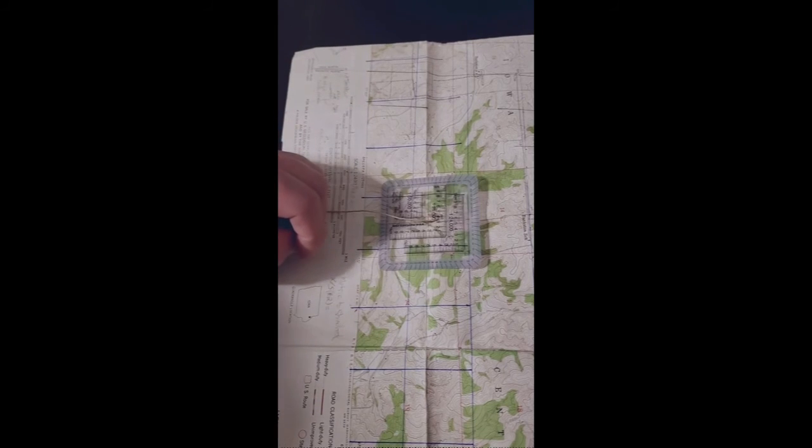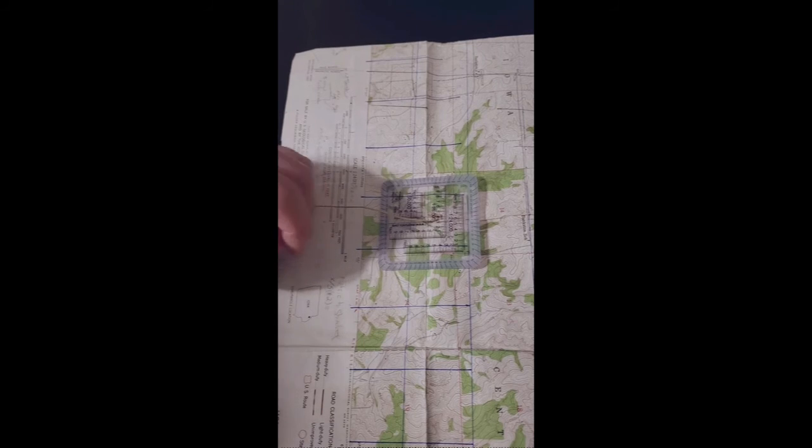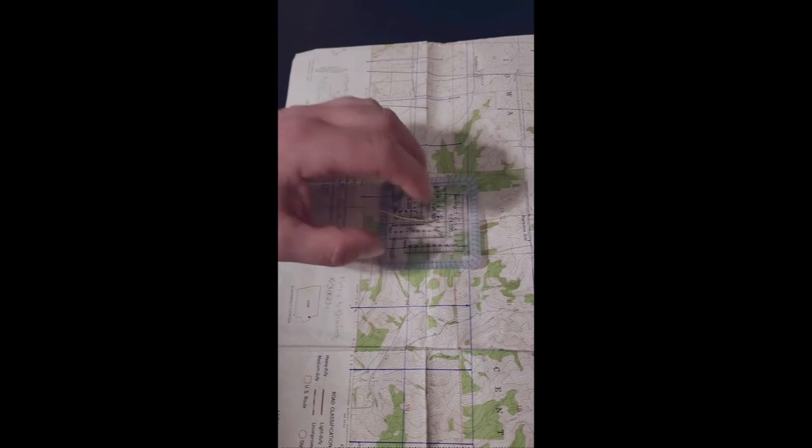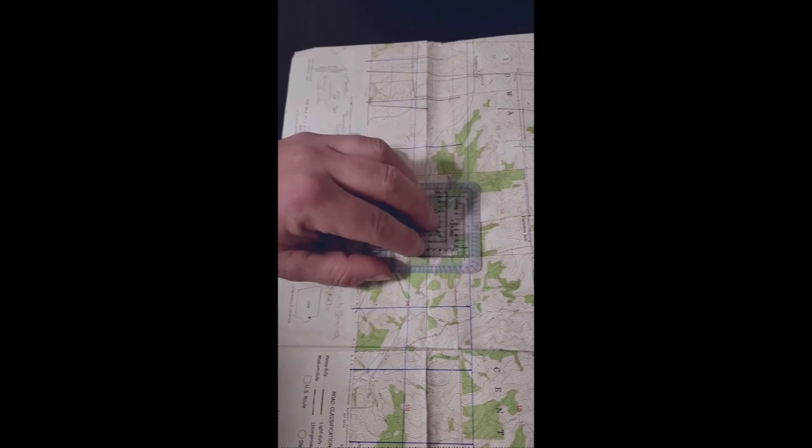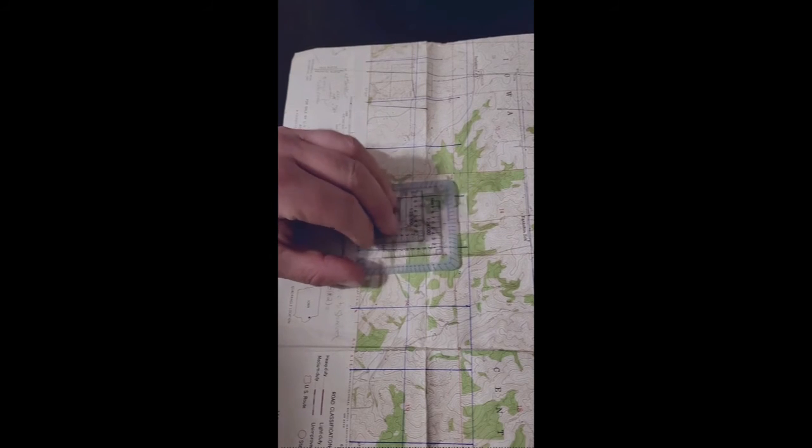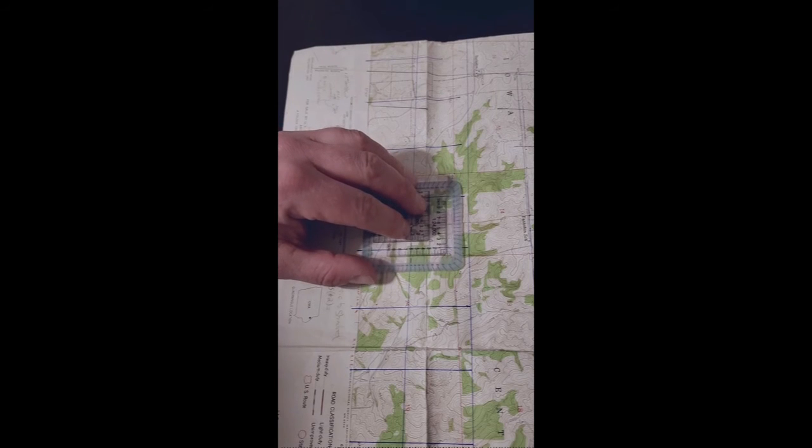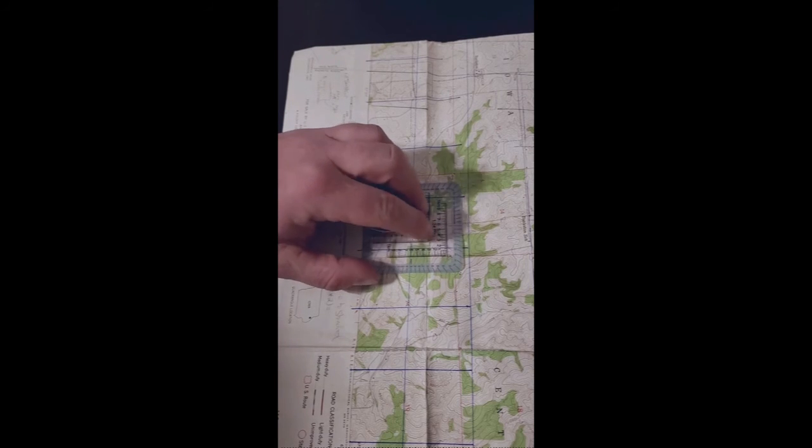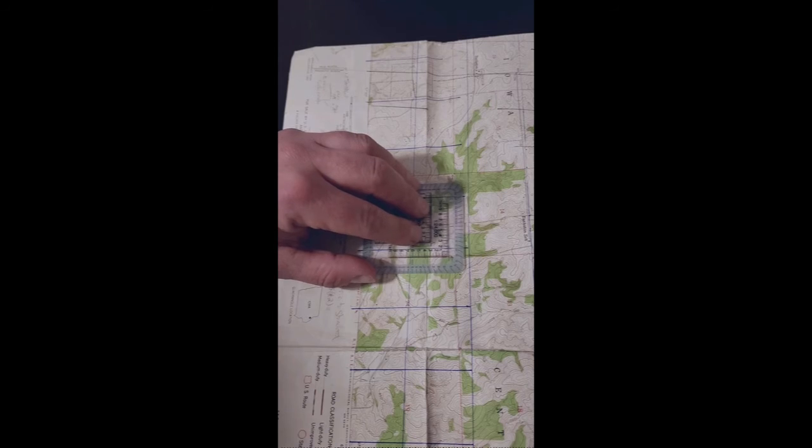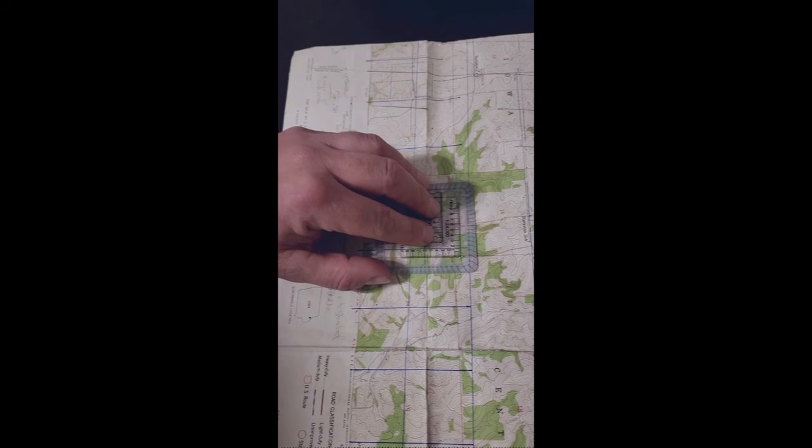So remember I said east was 49-45, that 45 is actually 4.5, four and a half. So four and a half meters essentially off. So I'm going to go east, so I'm basically going to go across four and line it up.